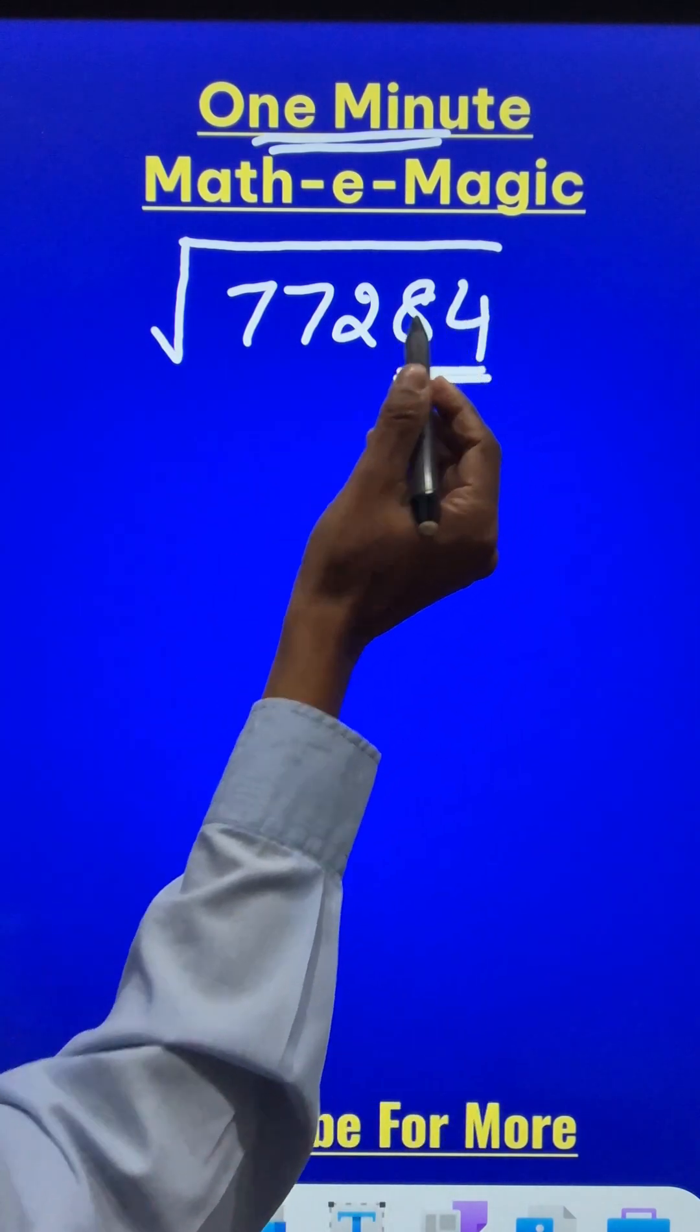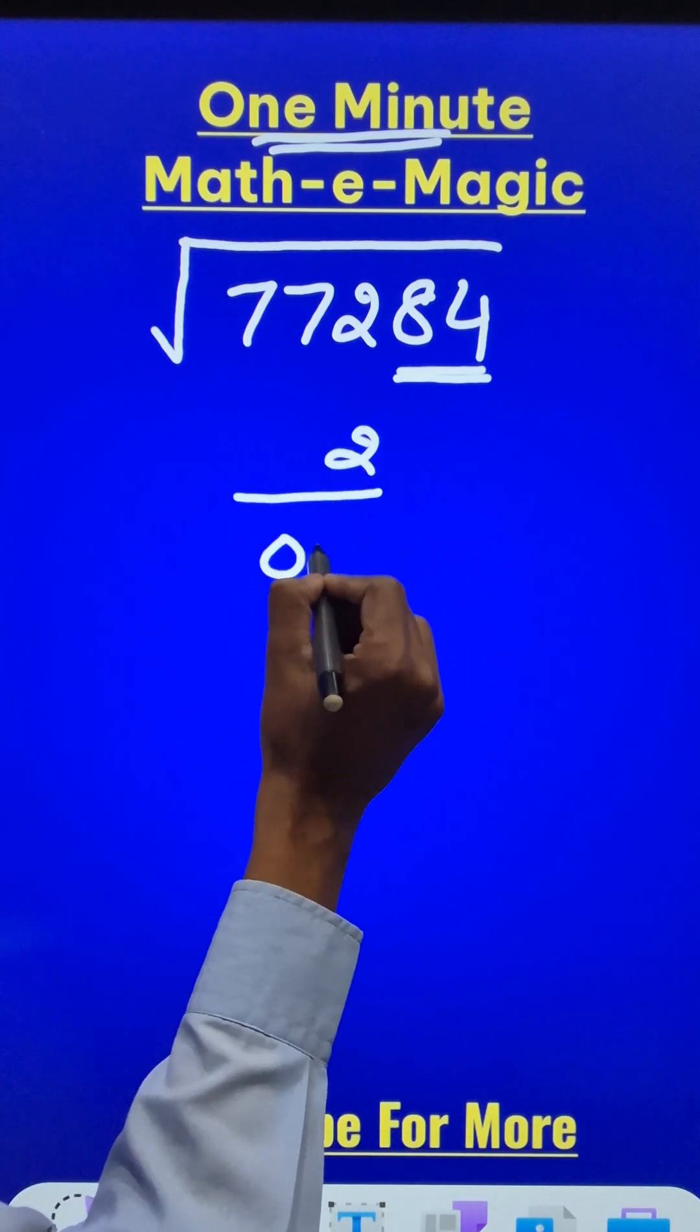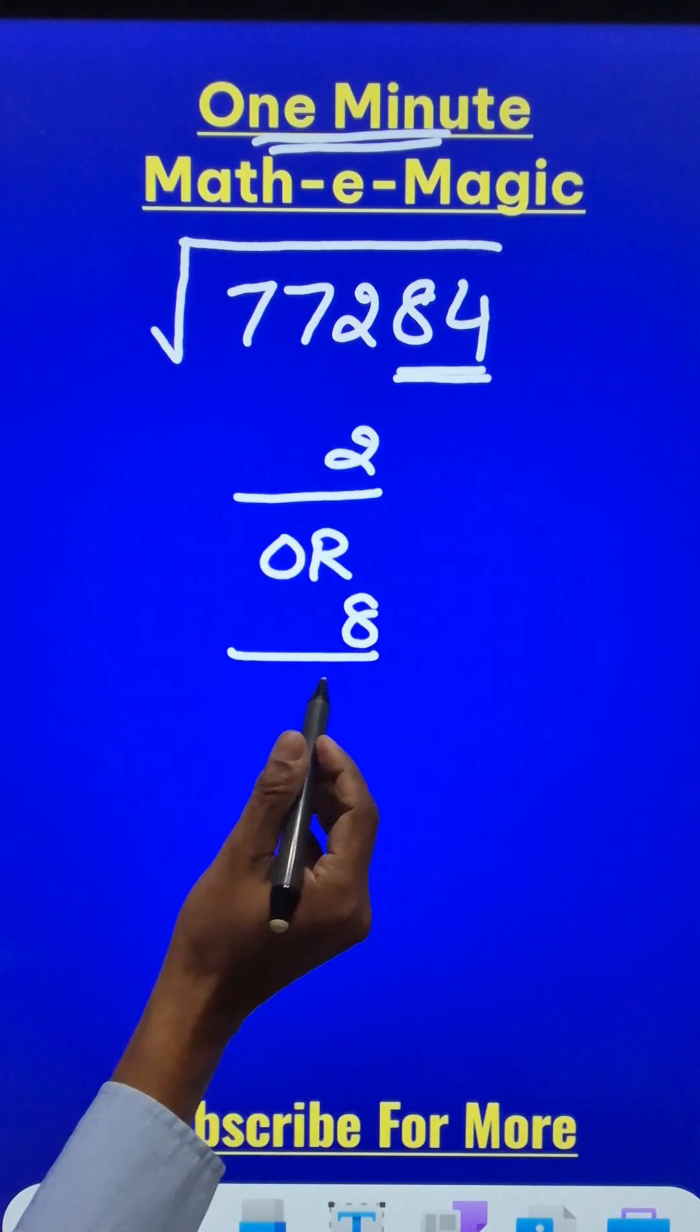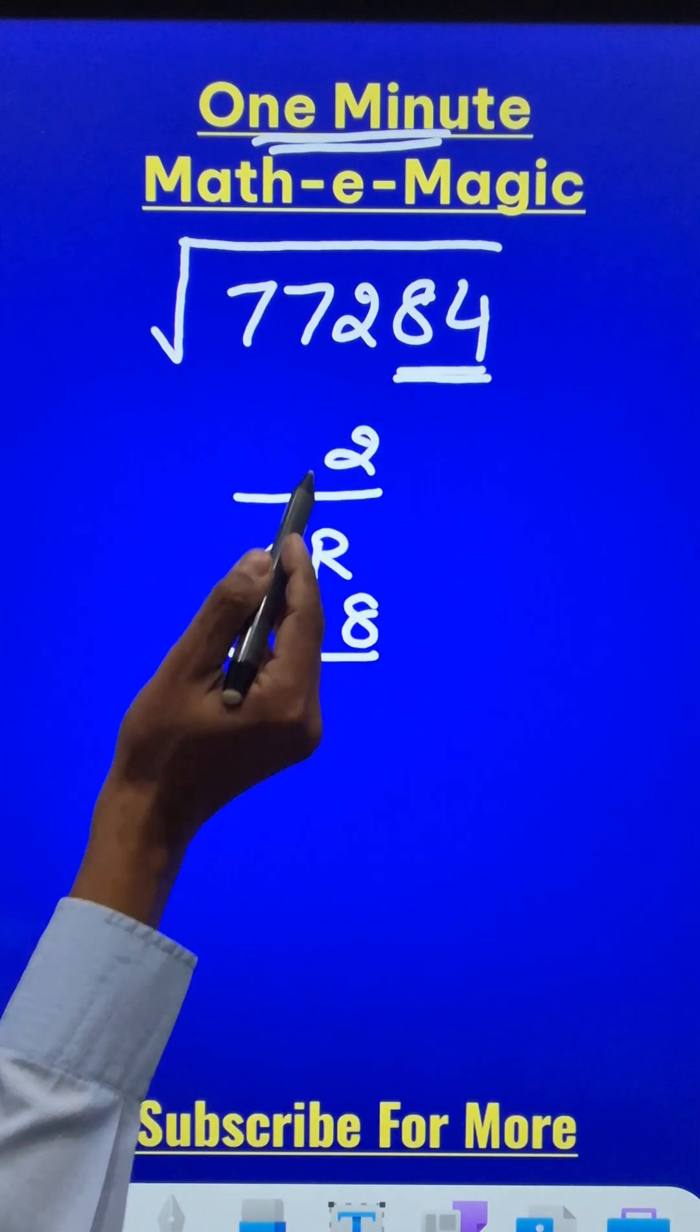The last pair of numbers, 84, ends in 4. The square of only 2 or the square of 8 ends in 4. 2 square is 4 and 8 square is 64. So my answer is going to end with 2 or 8.